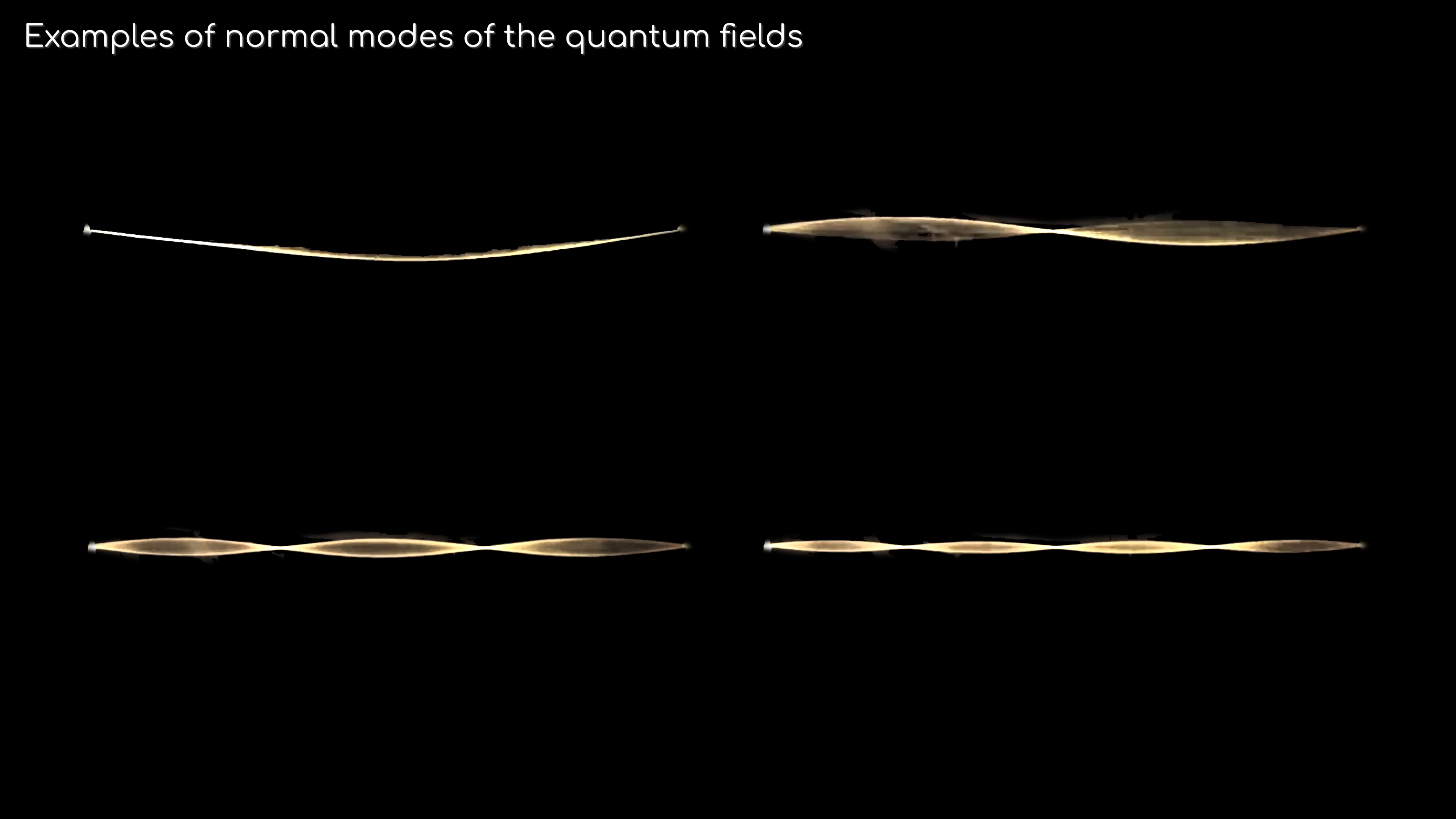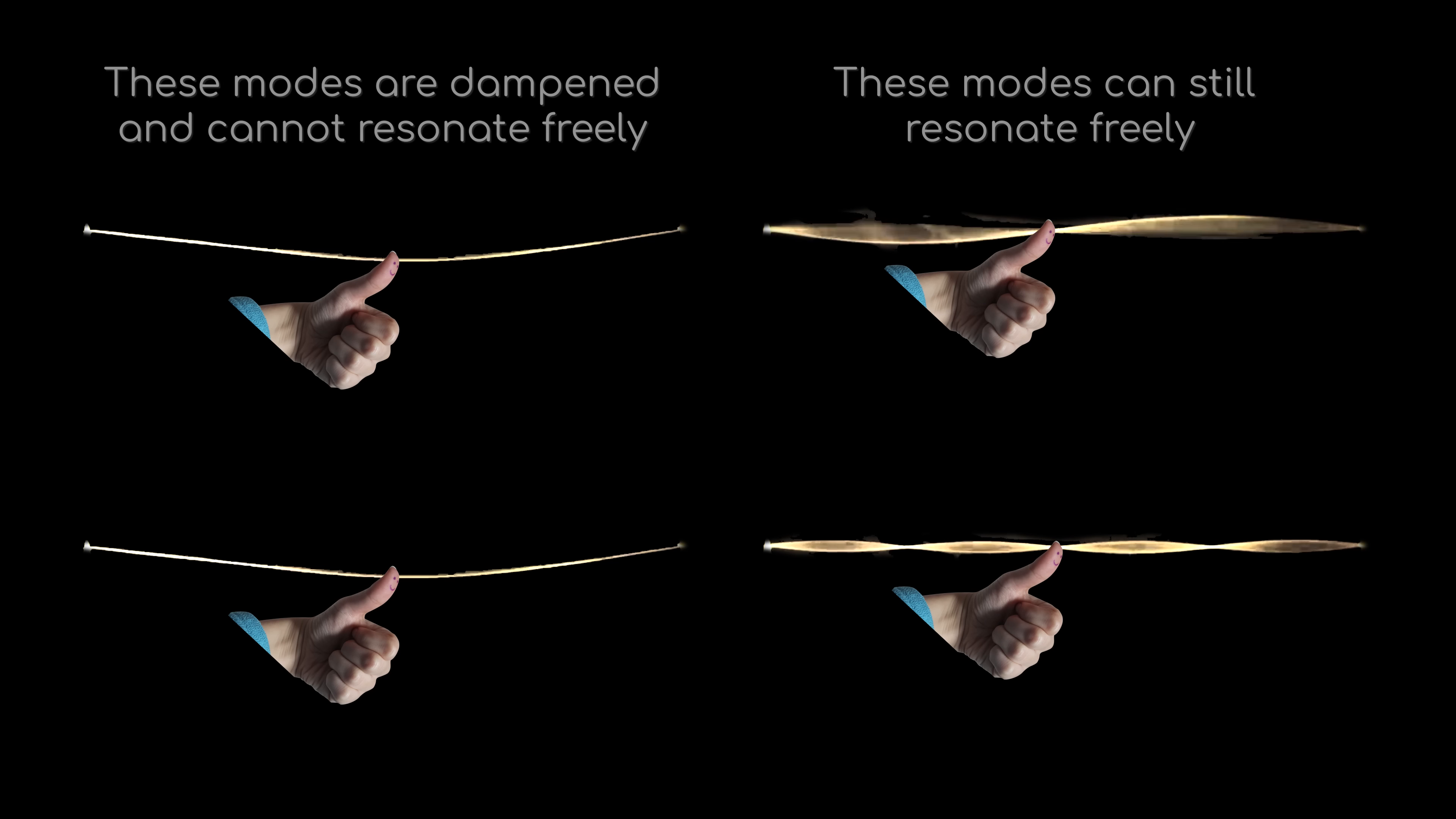However, what would happen if you stopped only some of those fields resonating? And that's where black holes come in. Black holes act a bit like putting your thumb on the guitar string of the universe. Due to their event horizons, certain resonances in the quantum fields are dampened down while others are not.